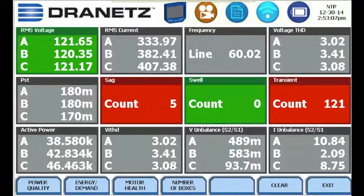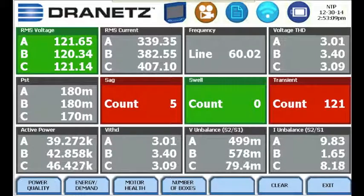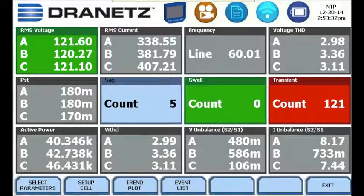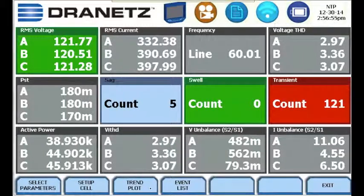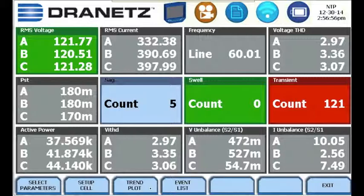Directly from the dashboard, you can also view an event list or a trend for any parameter. Once a cell has been highlighted, you can see the trend plot and the event list buttons at the bottom. You can view the trend plot and the event list by simply clicking those buttons.